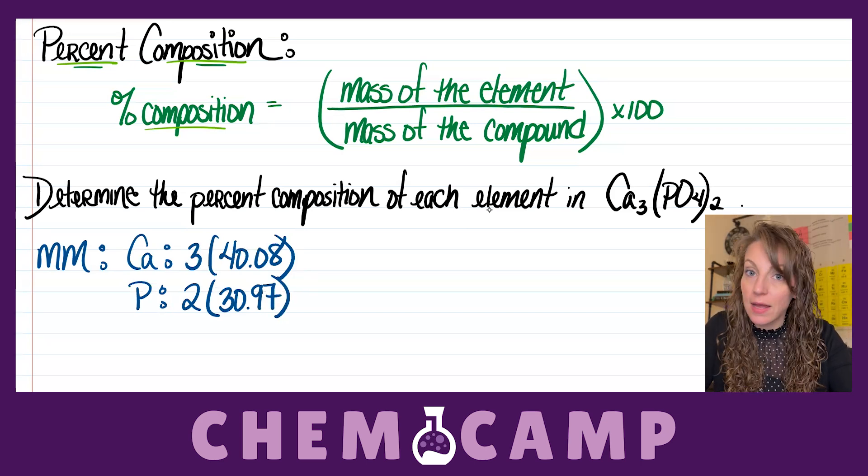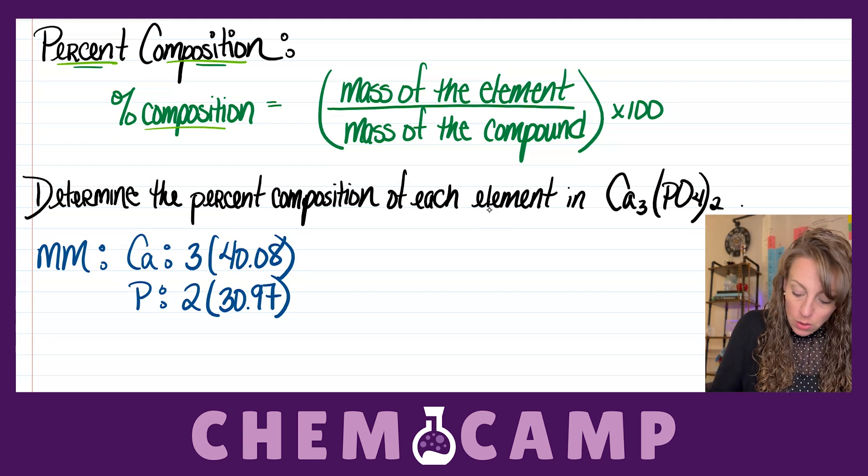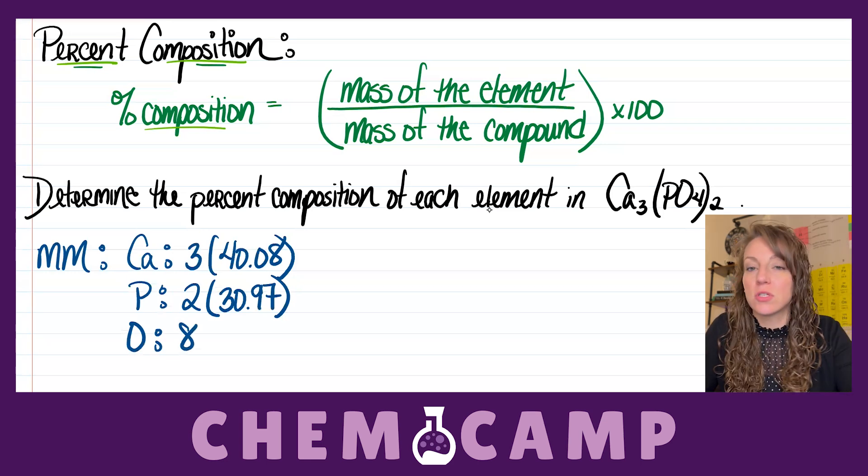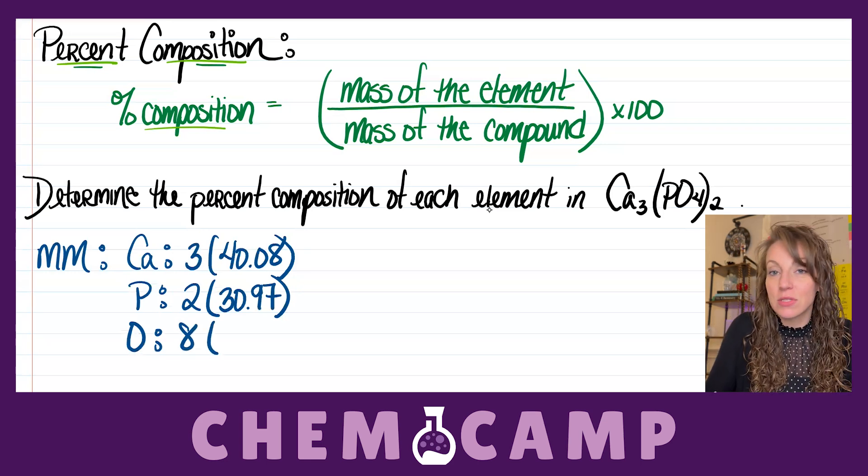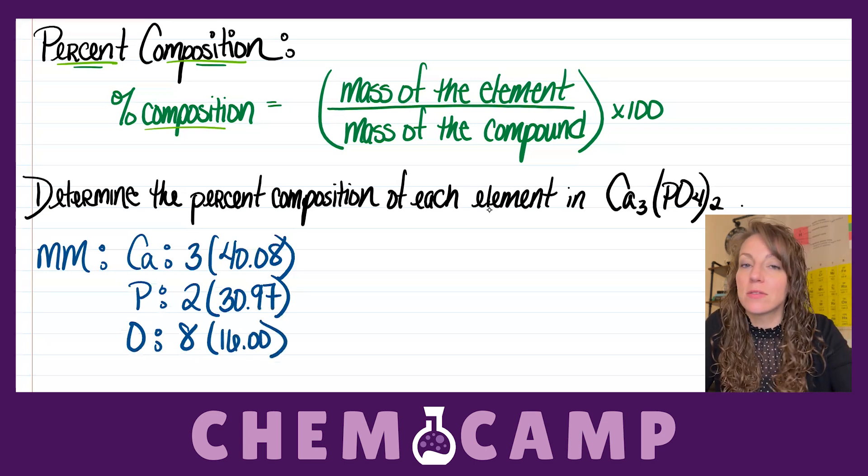Last up, we've got oxygen. Now, we've got 2 times 4 oxygens, which gives us a total of 8 oxygens times 16.00, the atomic mass of oxygen.